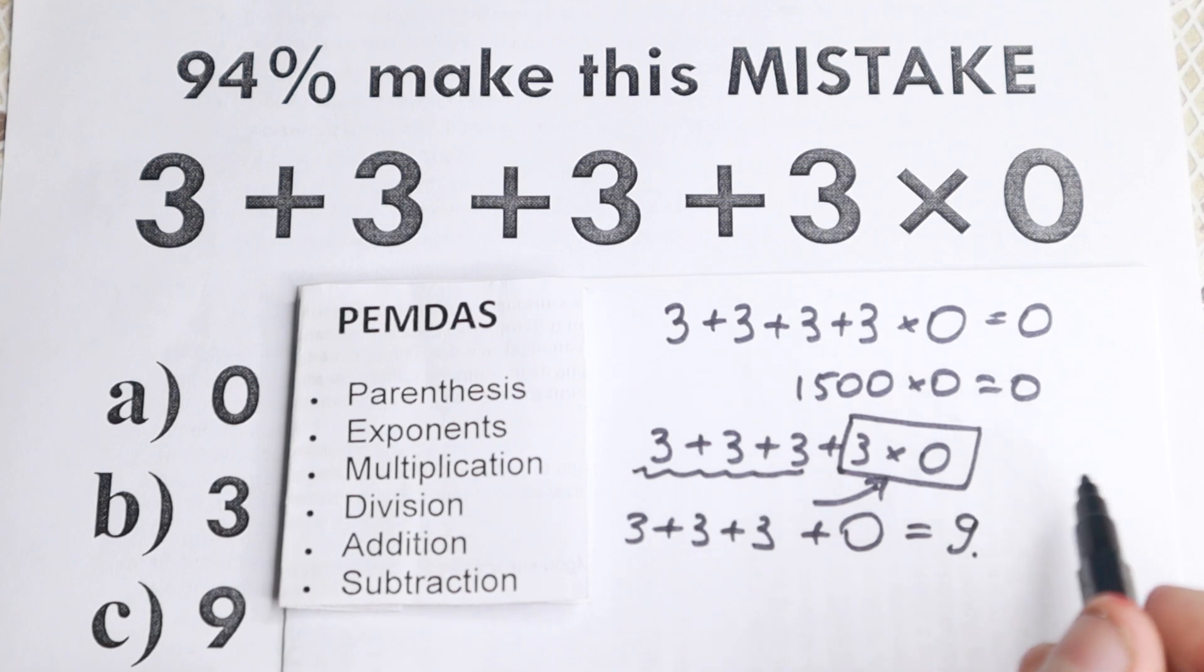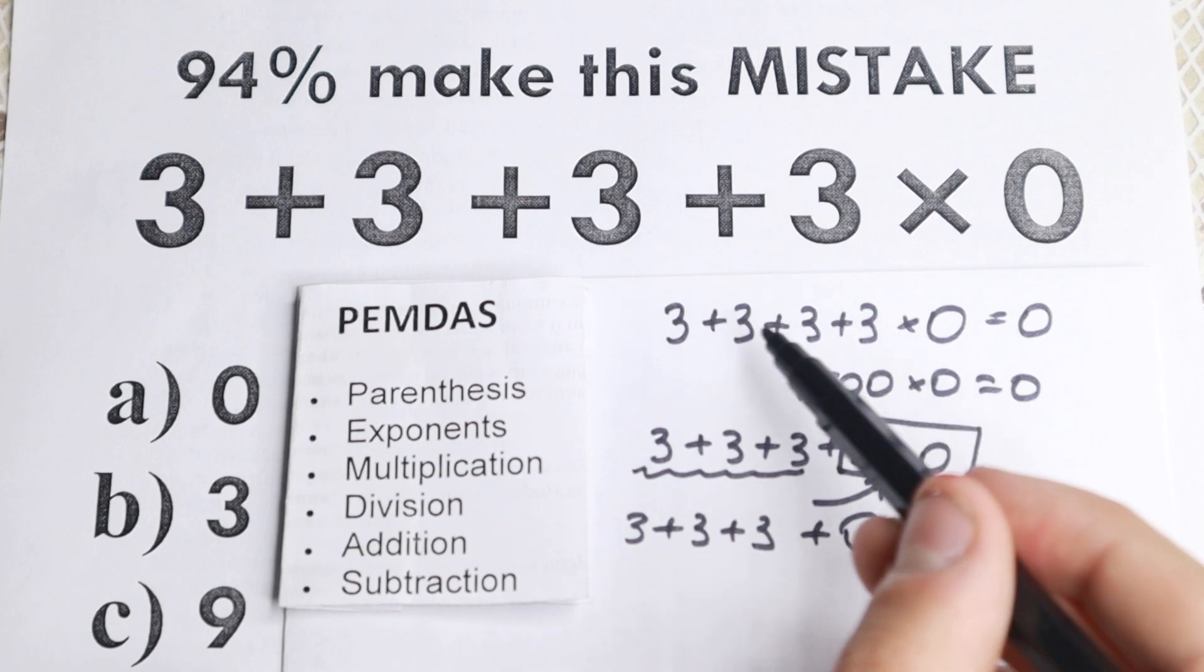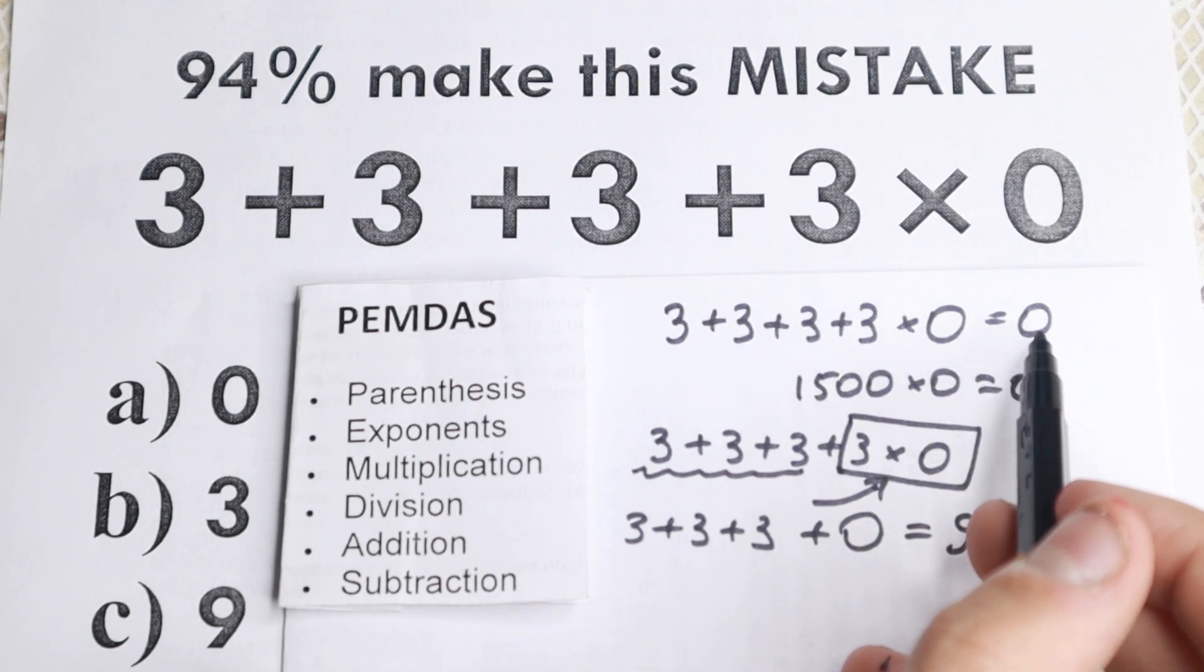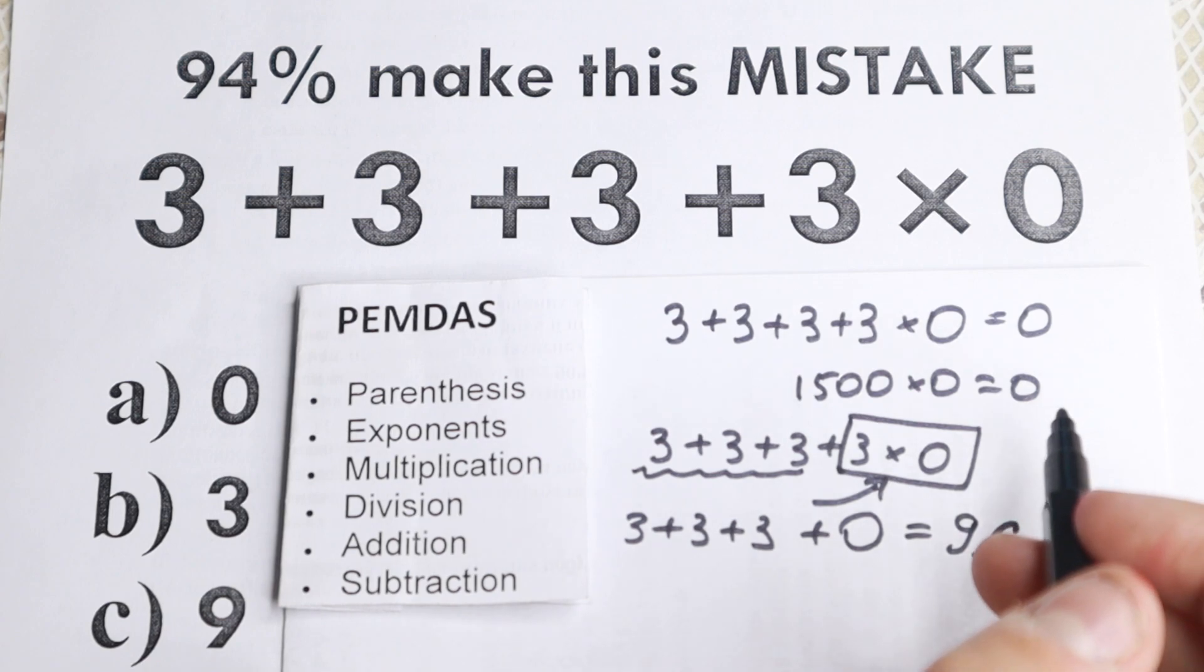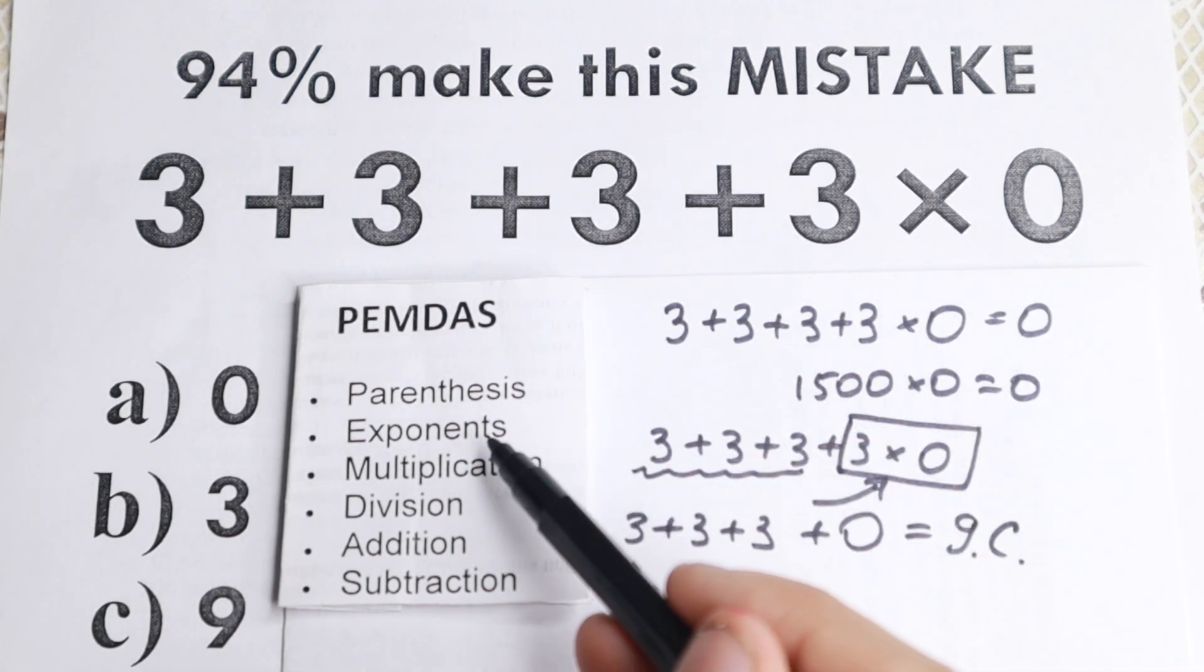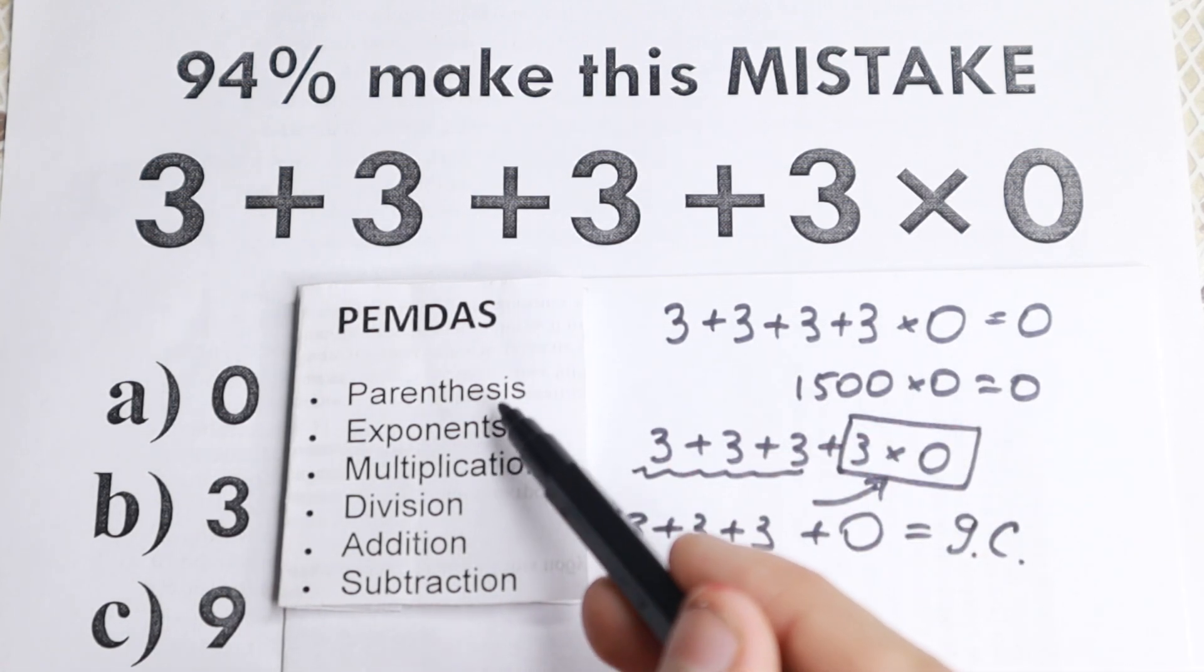But what about this approach? Because when I show them this PEMDAS order, they say now we understand about it. And the correct answer is option C is 9. But then I go back to this question. You want to get this 0. So what do you need to put right here to get this correct answer 0? We need to put only our exponent or parentheses.